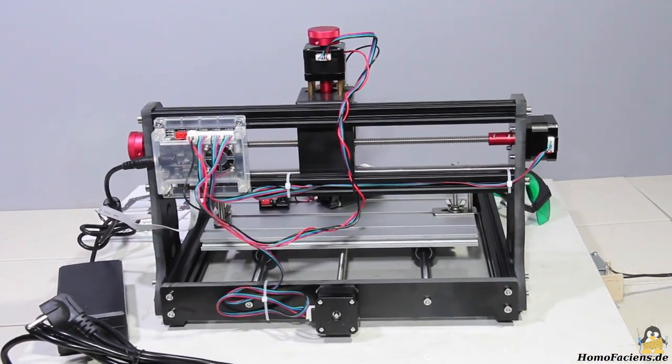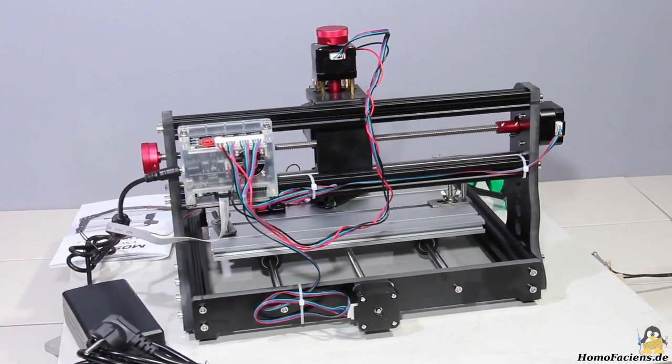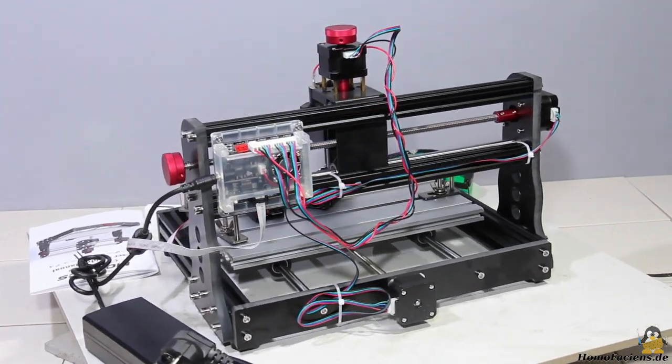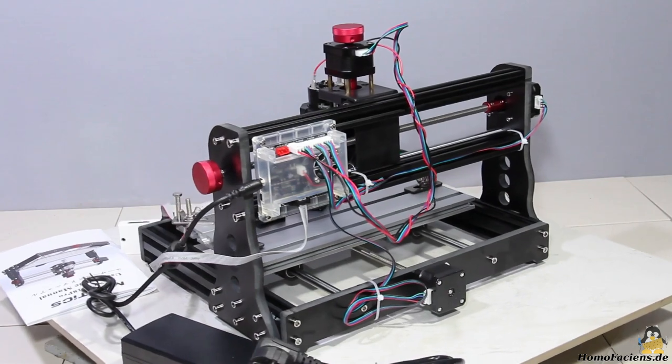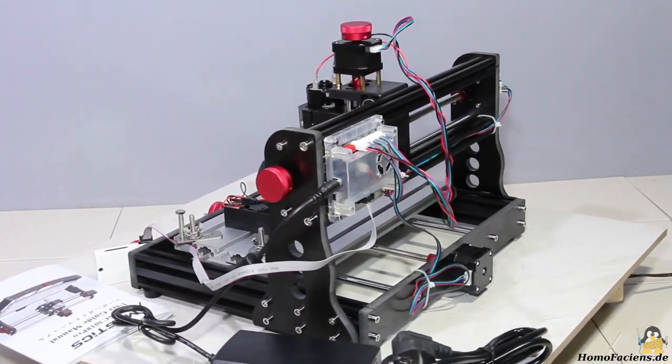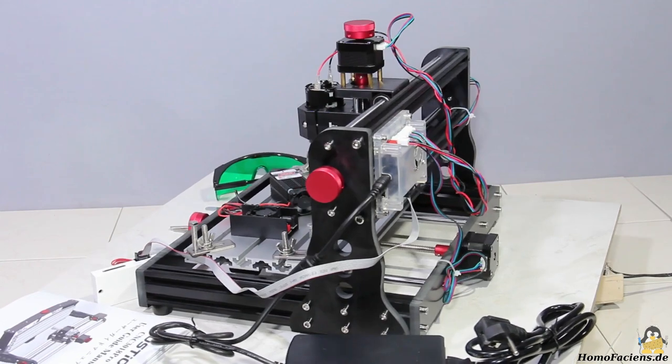I received a CNC machine type 3018Pro from Mostix. I accepted the offer to test this CNC because I wanted to check if I could do isolation milling with that machine, an idea I had in mind for a long time.